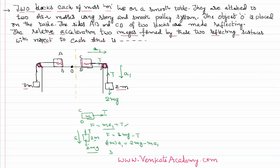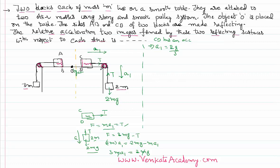Simplifying: m·a1 + 2m·a1 = 2mg, so 3m·a1 = 2mg. Cancelling m, we get a1 = 2g/3. That is the acceleration acquired by the CD mirror.